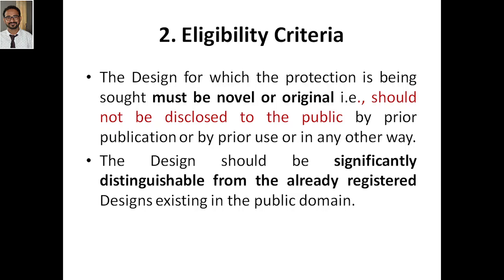The design should be significantly distinguishable from already registered designs — it should be so unique that people identify your entire company based on that particular product. For example, the Coca-Cola bottle, the iPhone, or the Mini Cooper — by looking at the design itself we understand it belongs to a particular company. That is industrial design. The second criteria: it should be significantly distinguishable from already registered designs existing in the public domain.